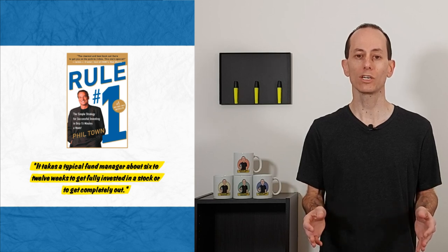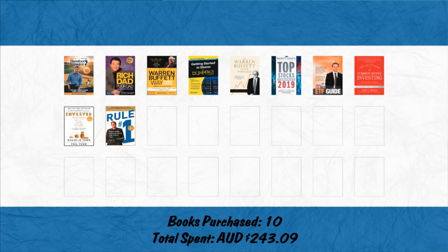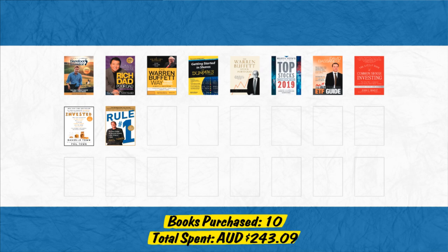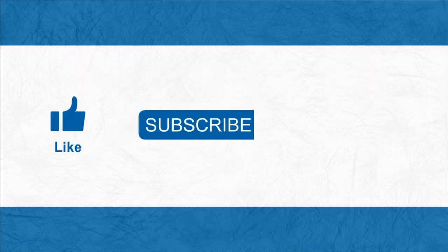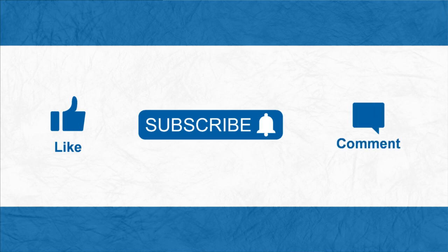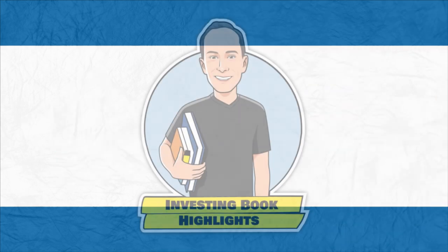Thank you Phil Town for writing Rule 1. In each video, I tally up the cost of the books I've read. As this was book 10, the total cost is $243.09 and that's in Australian dollars. To help build this channel, please click like and subscribe, and leave a comment or question below and I'll be sure to follow up. And I hope your day is full of highlights.